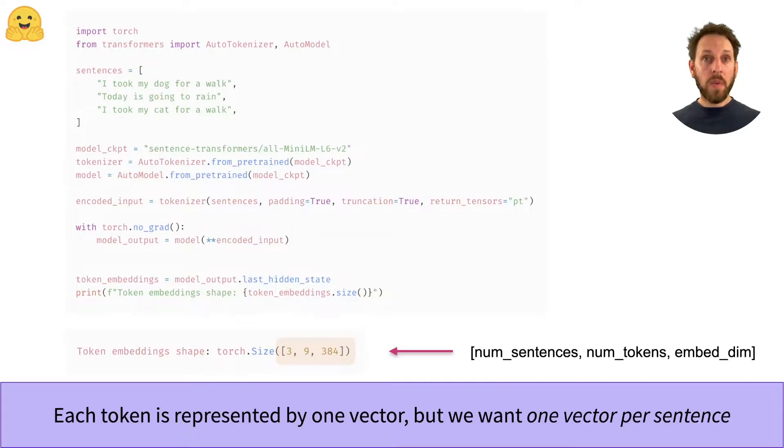For example, here we see that the output of our model has produced nine embedding vectors per sentence, and each vector has 384 dimensions. But what we really want is a single embedding vector for each sentence.